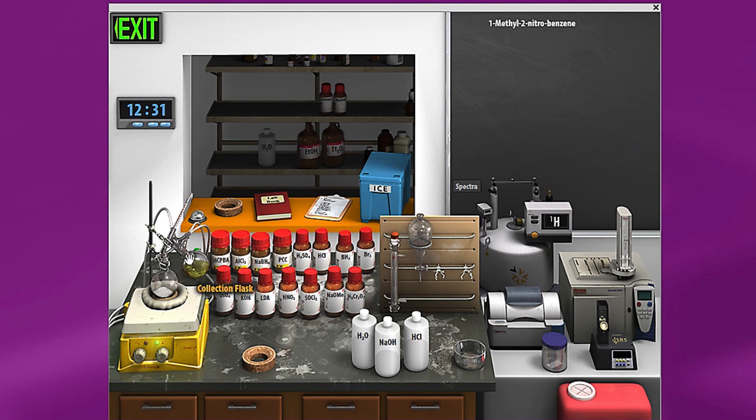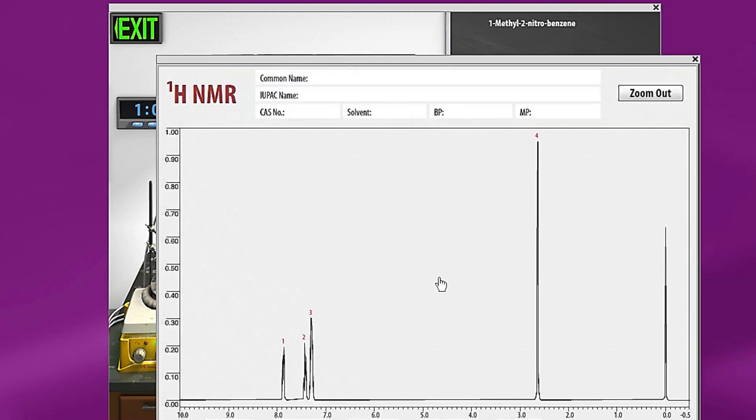So depending on which one you want to keep. Say in this case, I want the two nitro, just grab the collection flask and bring it right here. You can see that's all it has in there. Then you can go ahead and do your characterization. For example, you could do a proton NMR liquid and it will pull up your proton NMR for your pure product.